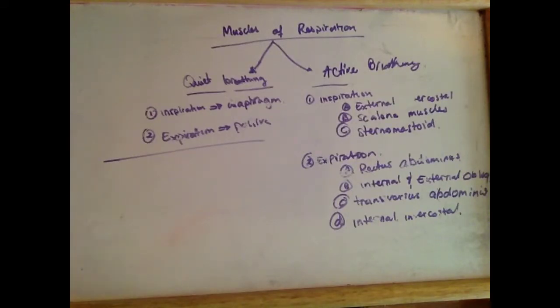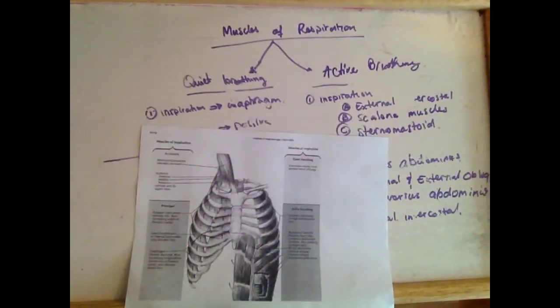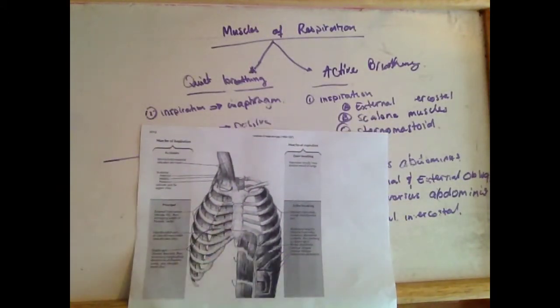In quiet breathing, during inspirations, all you use is the diaphragm which contracts. When it contracts, the domes of the diaphragm will descend and thus increase the longitudinal dimensions of the thoracic cavity. And it also elevates the ribs and that will lead to inspirations.